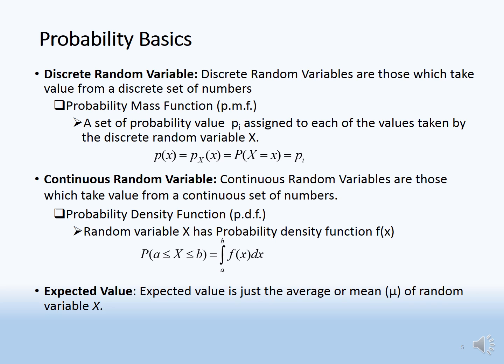Expected value: the expected value is simply the average or mean of the random variable x, defined as E(x) = summation of x_i times P(x_i).